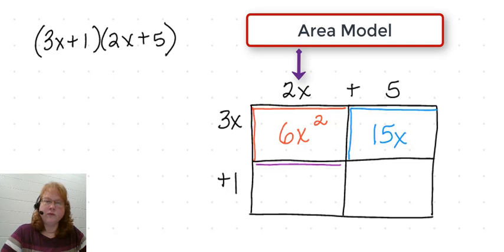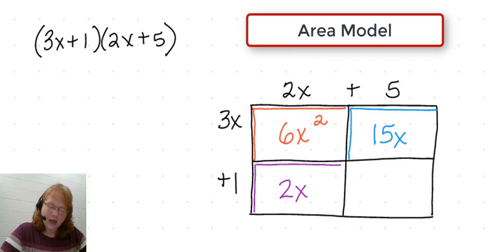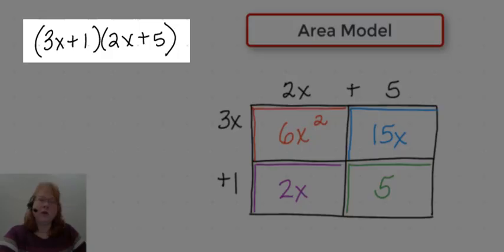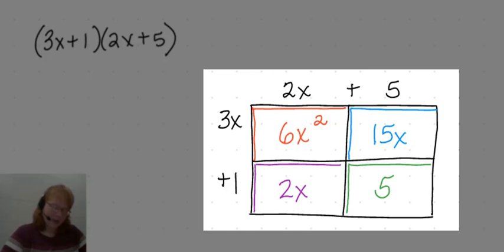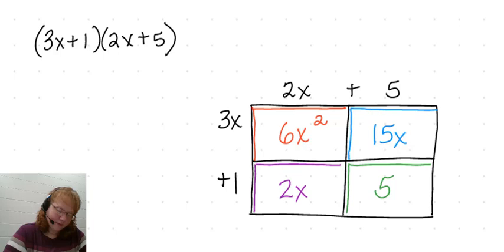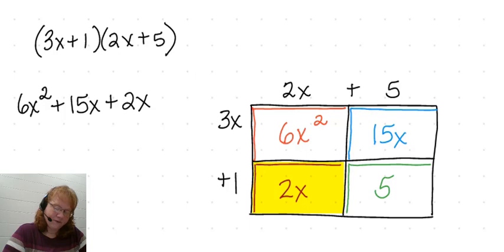Let's take a look at the third rectangle. It has a length of 2x and a length of 1. So 2x times 1 is 2x. And then the last rectangle has a length of 5 and a length of 1, and 1 times 5 is 5.